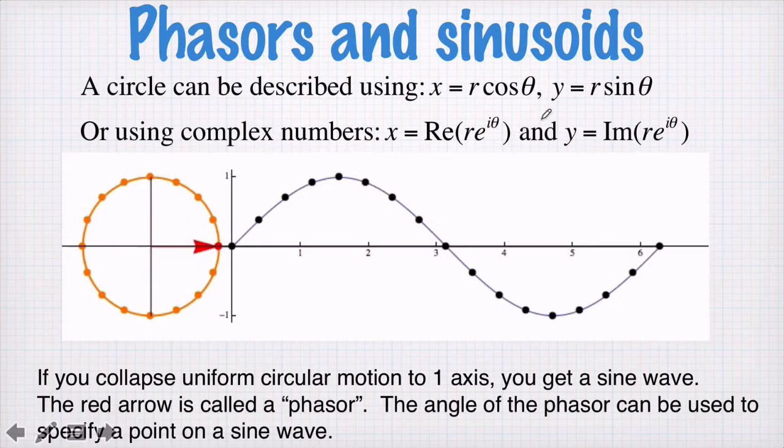So I want to think now about a graphical way, a visual way of understanding what e to the i theta actually means. And we're going to start with a circle. A circle can be described using a parametric equation where x is given by r cos theta, like this, where r is the radius of a circle. And as we trace out theta, as we increase theta, then x and y will plot out a circle.